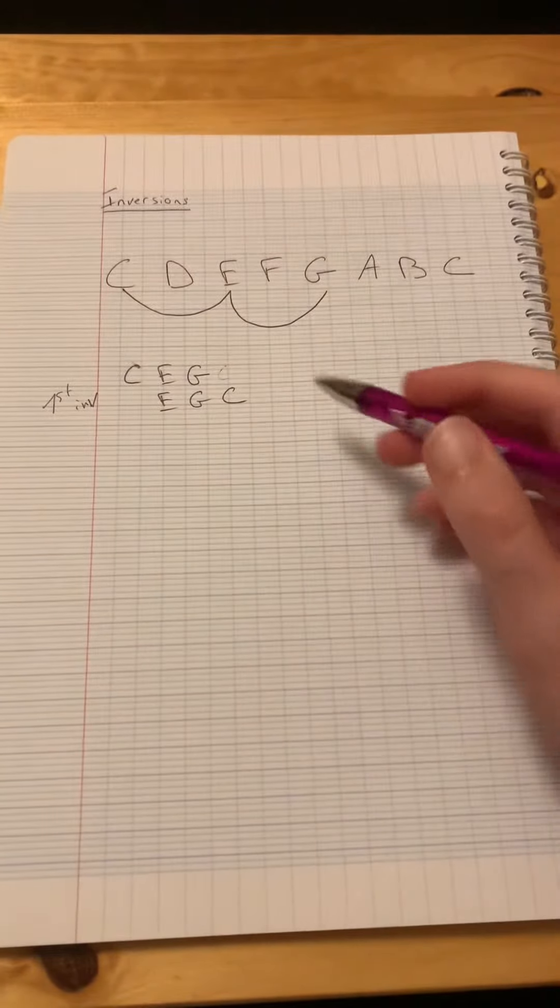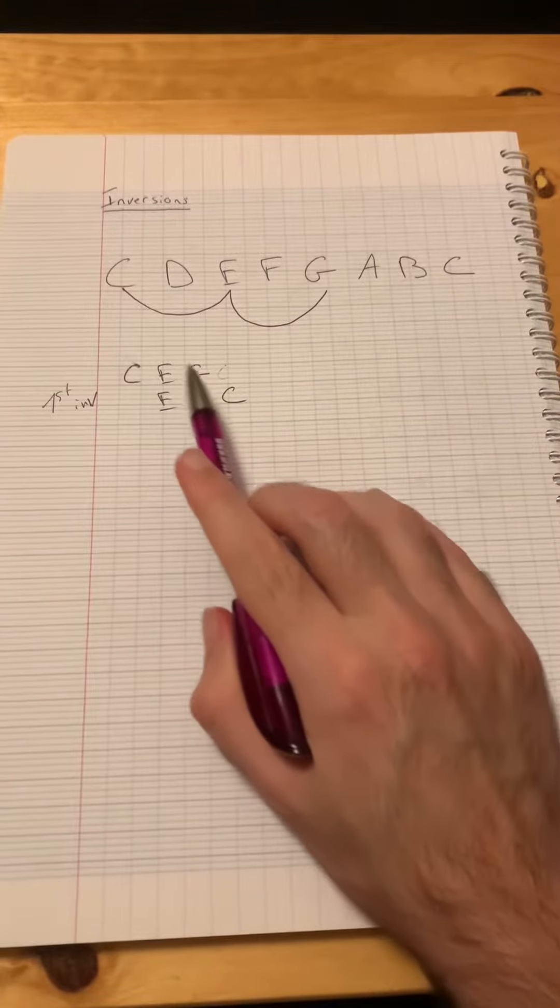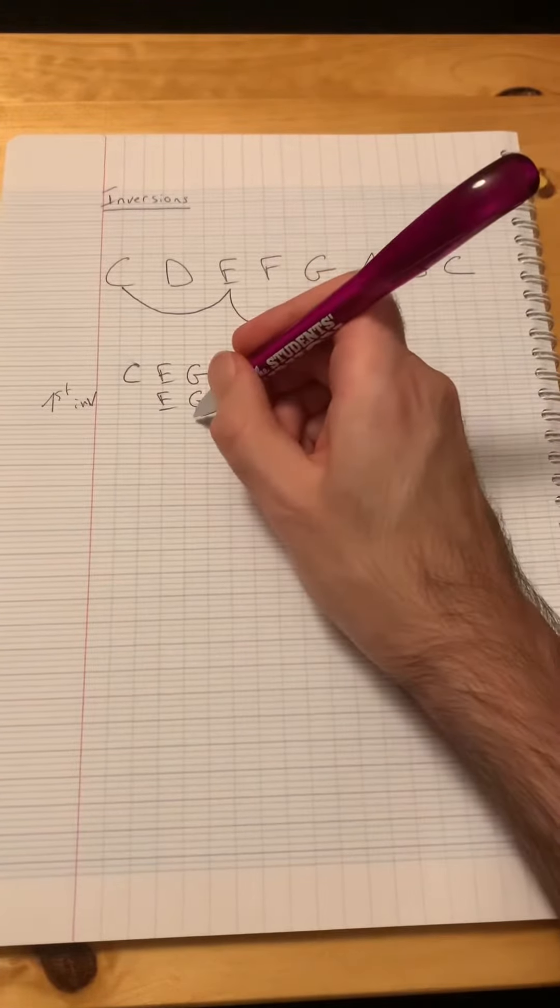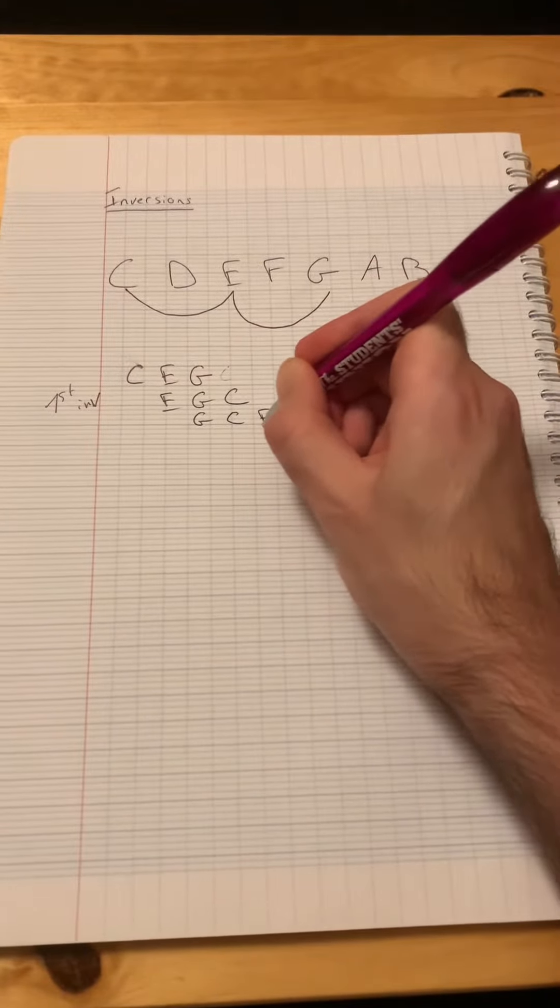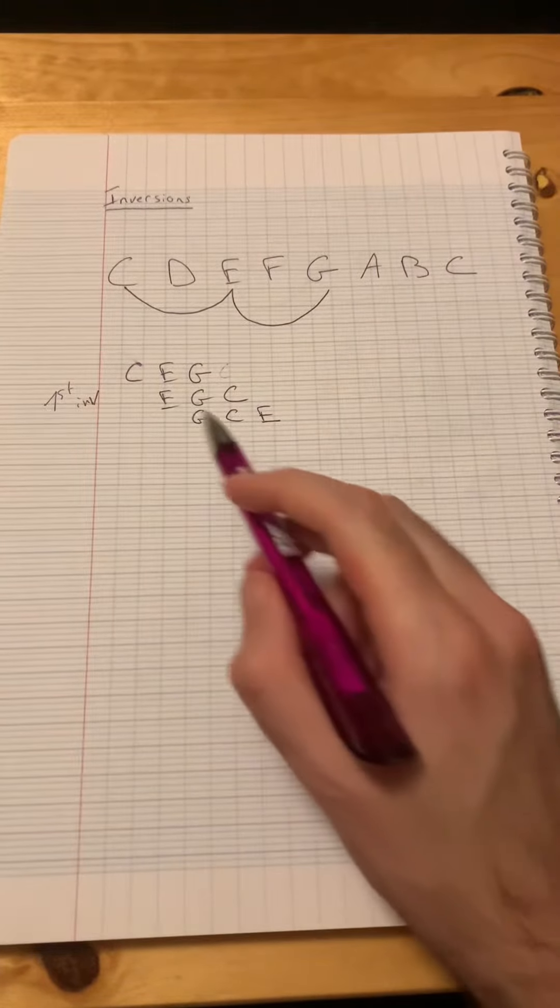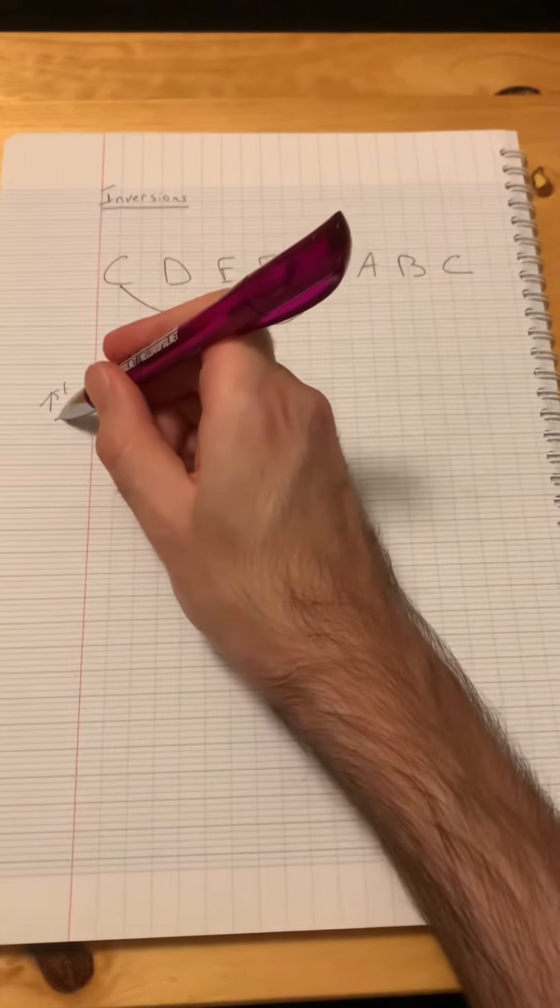Because we have three notes, we can continue that as well. We can also go G, C, E. You understand? And that would be called the second inversion.